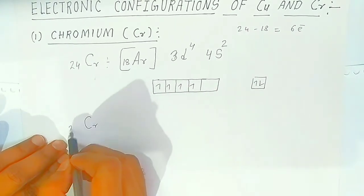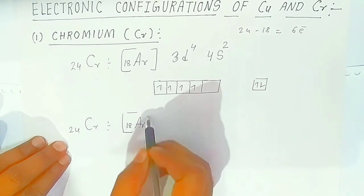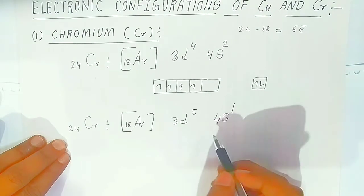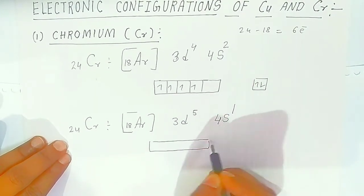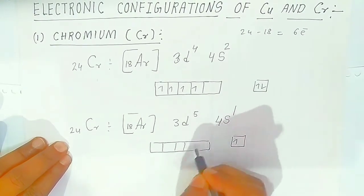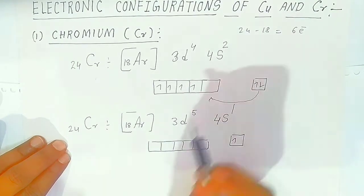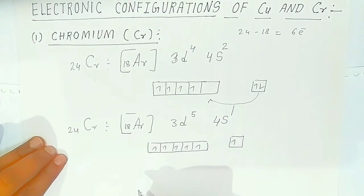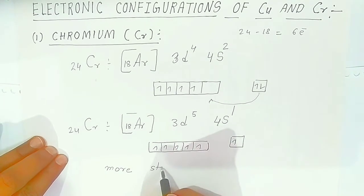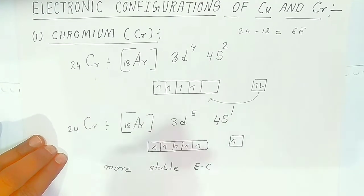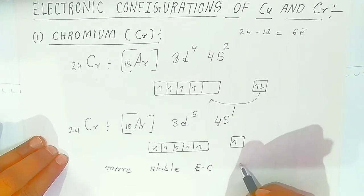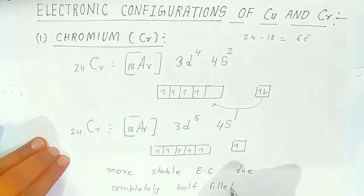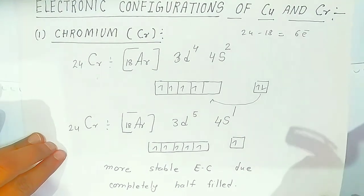However, when chromium forms a compound, it is observed to be more stable with a different configuration. One electron jumps from 4s to the inner 3d orbital, giving 6 total unpaired electrons. This is more stable due to the completely half-filled d orbital stability. So the actual observed electronic configuration of chromium is [Ar] 3d5 4s1.